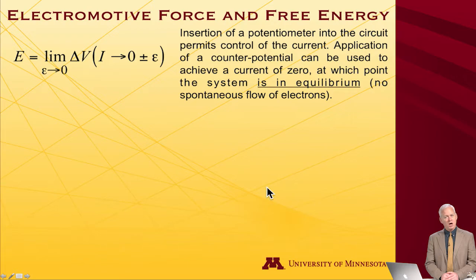And we will then adjust with a counter potential in order to make the net potential and the net flow of electrons zero. As we send the current to within epsilon, some infinitesimal distance from zero, we can define the electromotive force as the delta V that's being applied in order to create that zero current situation.